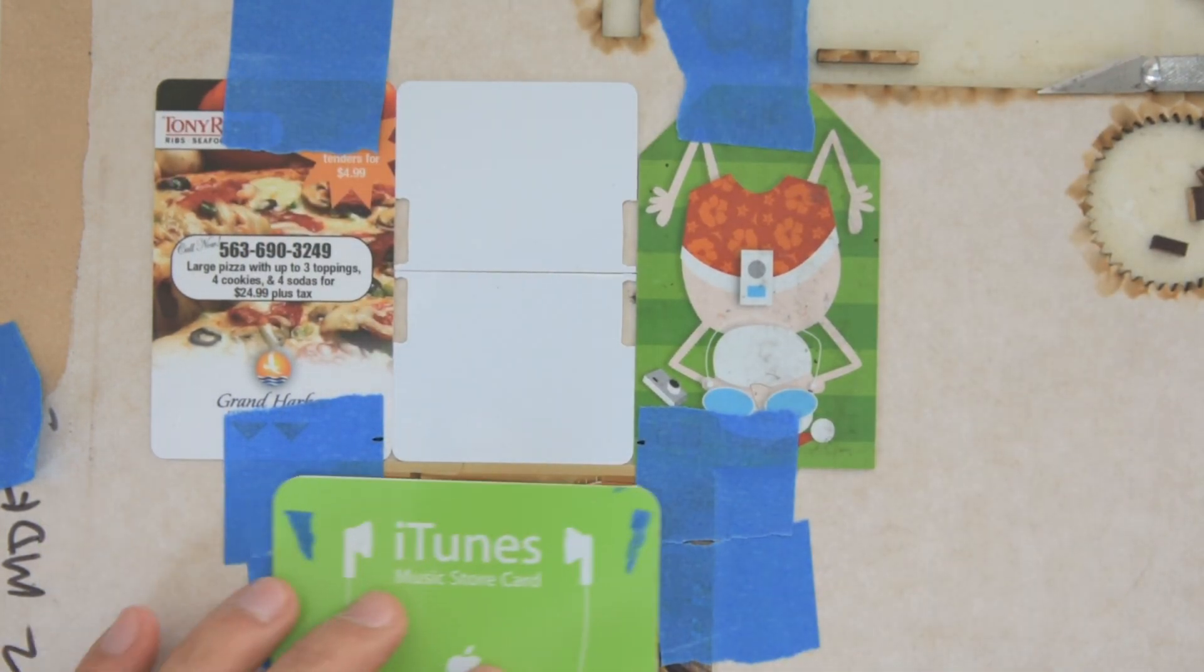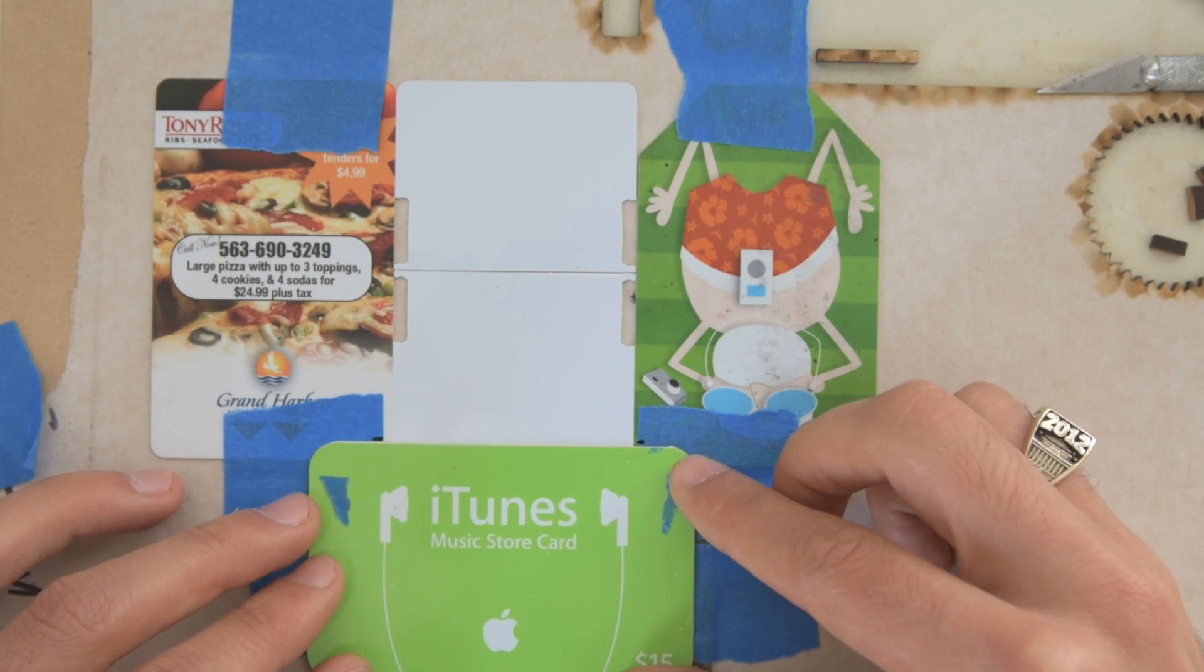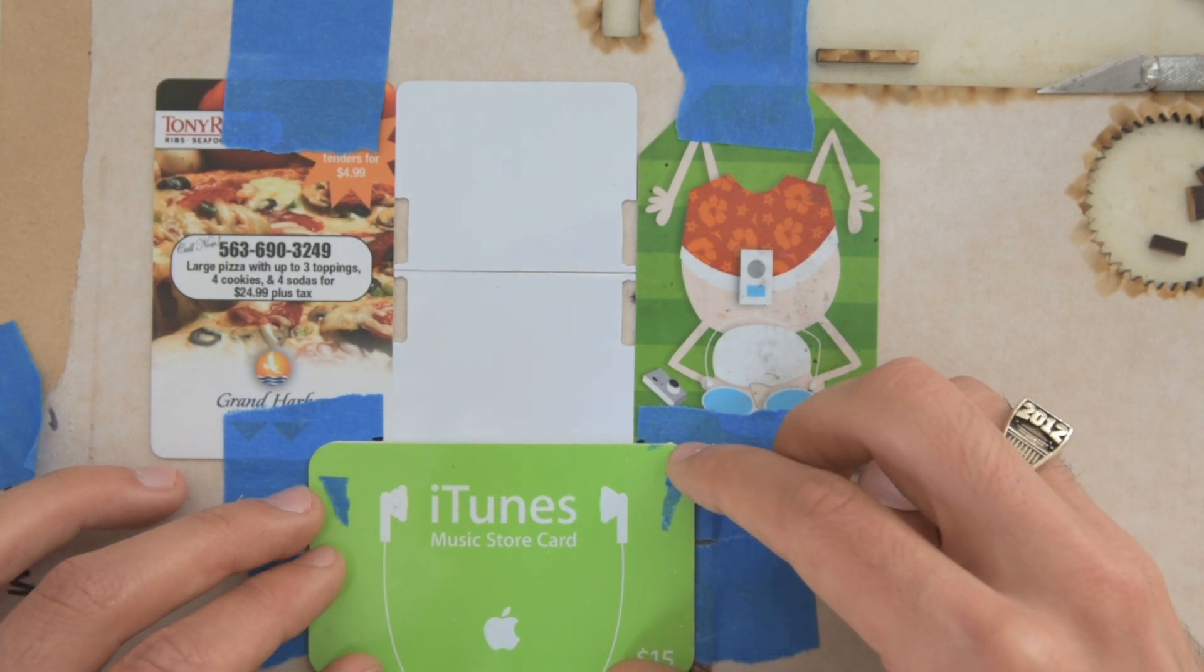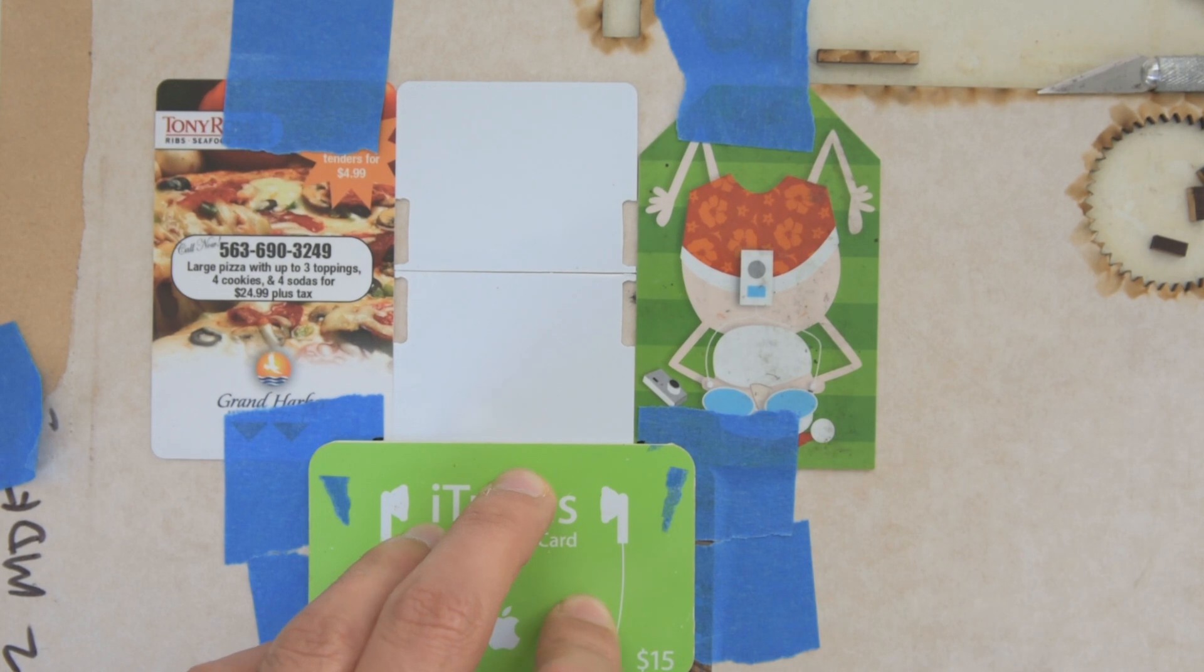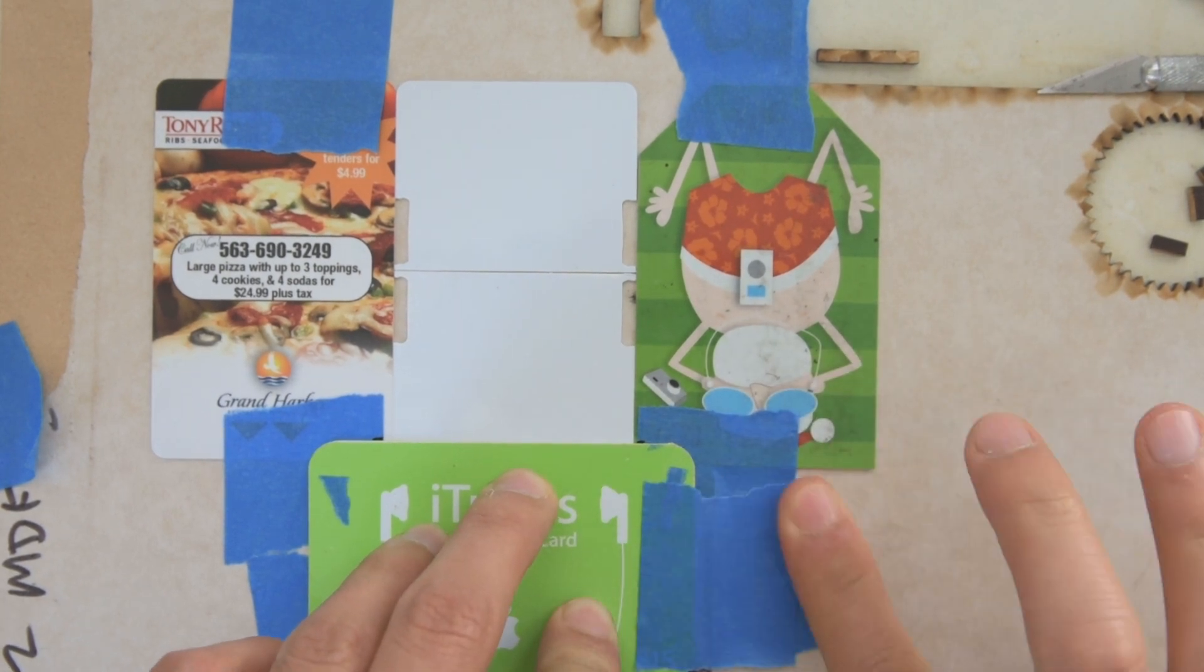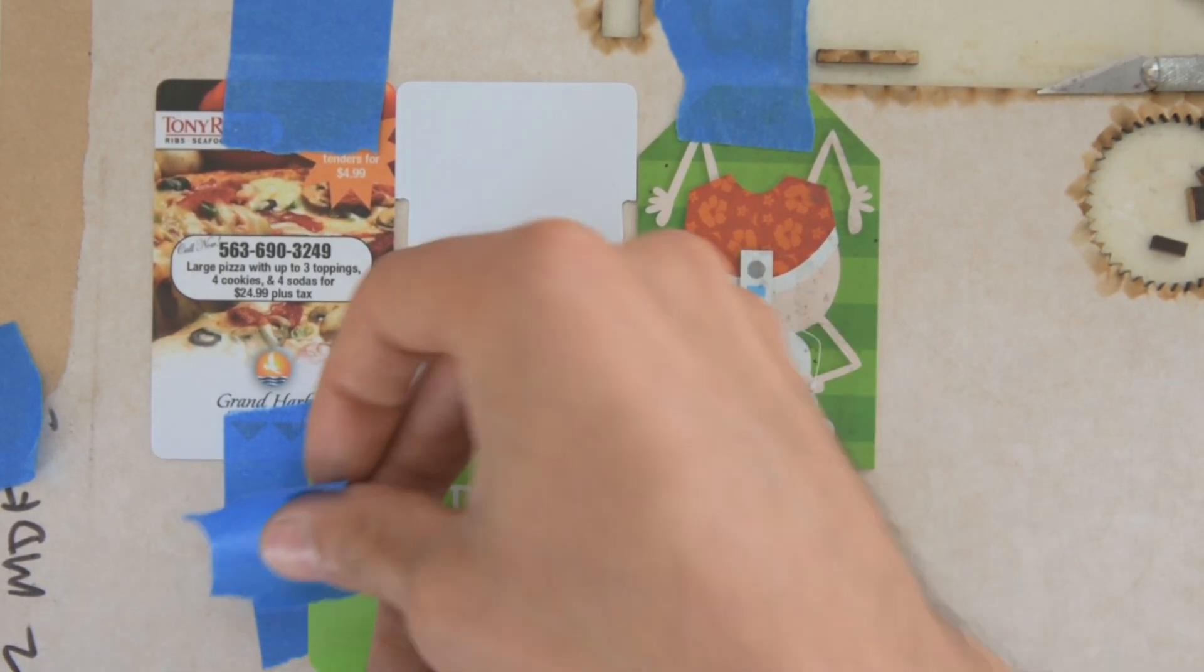And then we can take our fourth card and align it with those two marks. And then again, just tape that down in place.